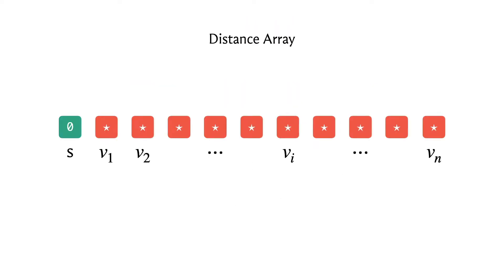We're going to continue working with a distance array, which will typically be initialized in this way: you have a fixed source vertex, and the distance from the source to itself is zero. To begin with, you don't know anything about the distances to the other vertices, so we initialize these values to infinity in principle — and in your code you want this to be a sufficiently large number.